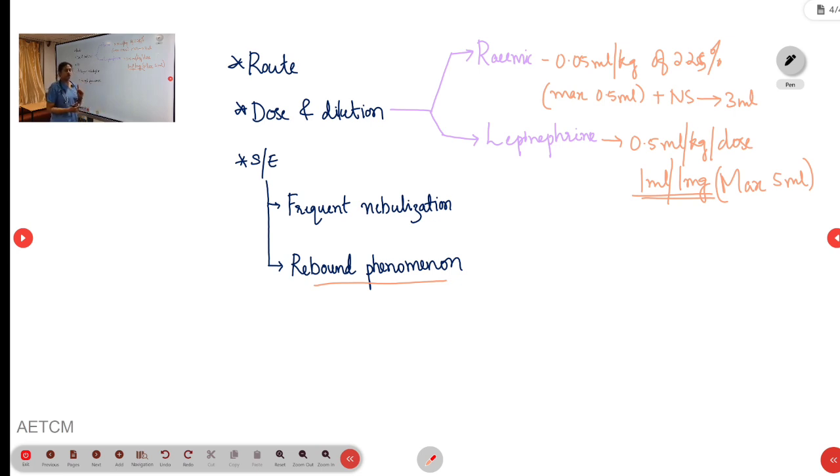If we are planning to give only one nebulization, we have to observe the patient in the emergency room for 3 to 4 hours to check for rebound phenomenon. This covers the two side effects: frequent nebulization requiring monitoring for cardiac side effects, and remembering the rebound phenomenon. This is all about nebulized epinephrine. Thank you.